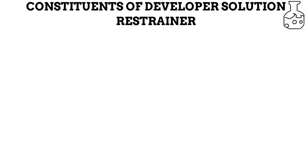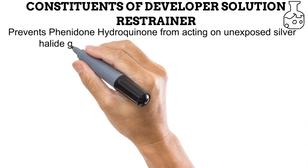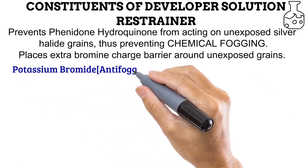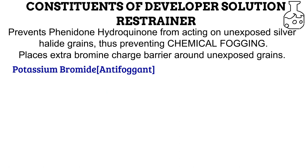The bromine charge barrier prevents development of unexposed silver halide grains, but this holds true only for a certain period of time. If the film is left in a developer solution for a long period, the solution eventually breaks the charge barrier and develops an unexposed grain — a phenomenon known as chemical fogging — which reduces the contrast of the radiographic image. This is where the restrainer comes in. It reduces the tendency of unexposed grains getting developed by placing an extra bromine charge barrier around them. The most widely used restrainer is potassium bromide, commonly known as antifogant.